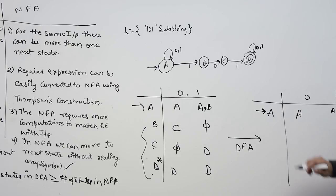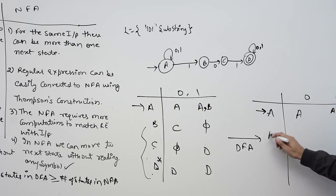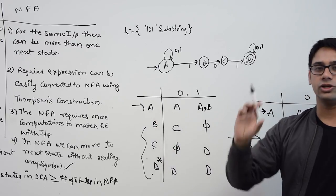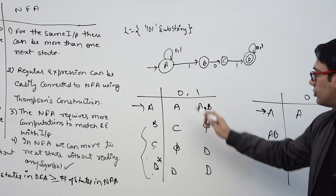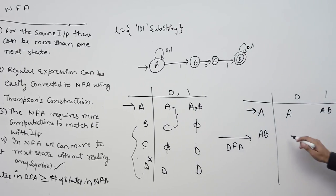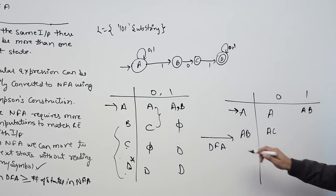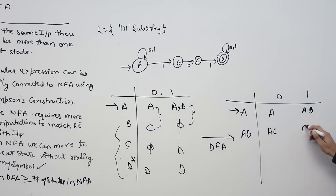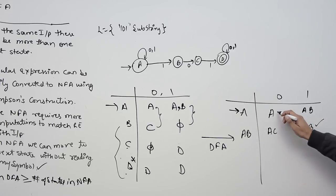We have defined state A but not state AB. To define AB, take the union of transitions from A and B. On 0, the union gives AC. On 1, the union gives AB. So state AB on 0 goes to AC and on 1 goes to AB.